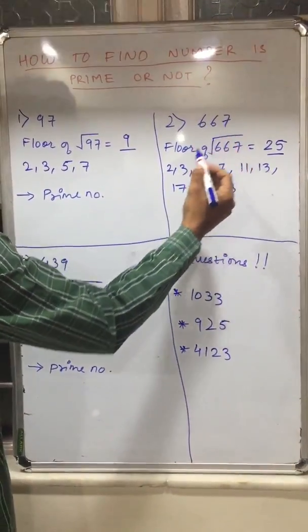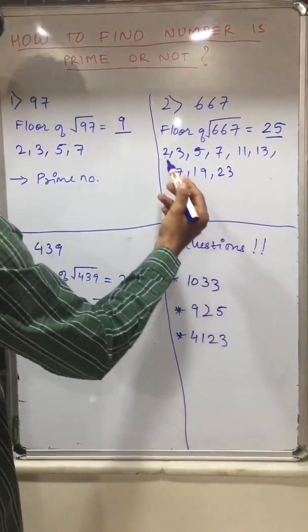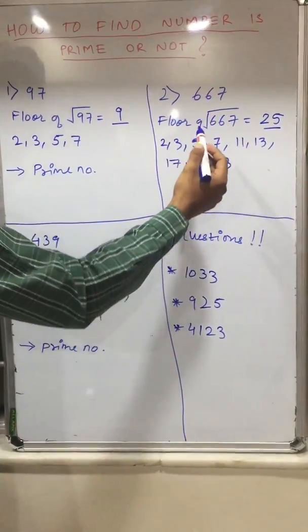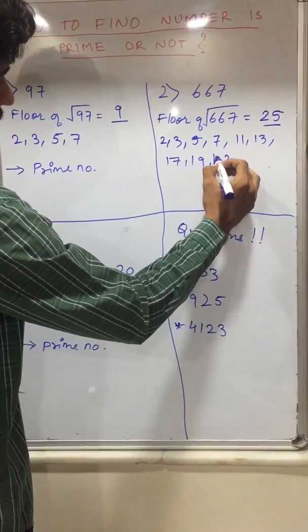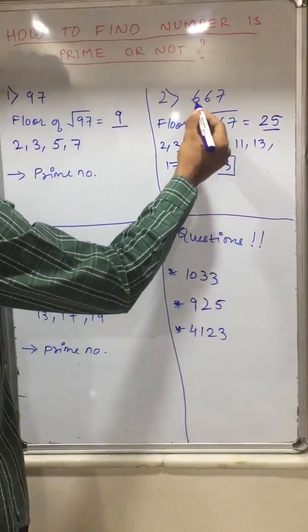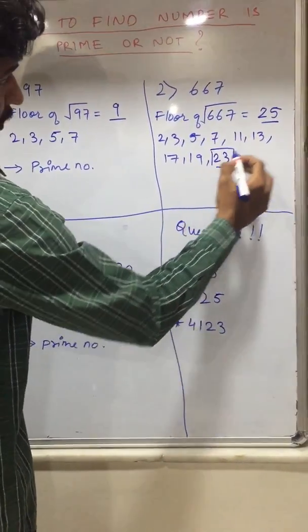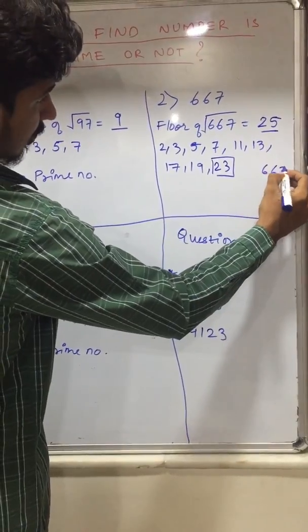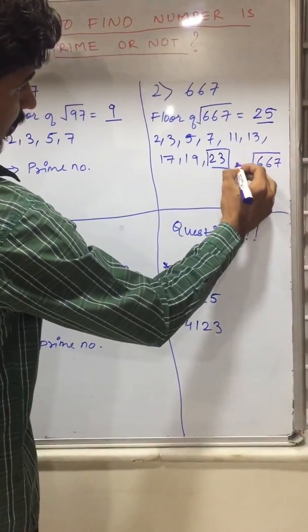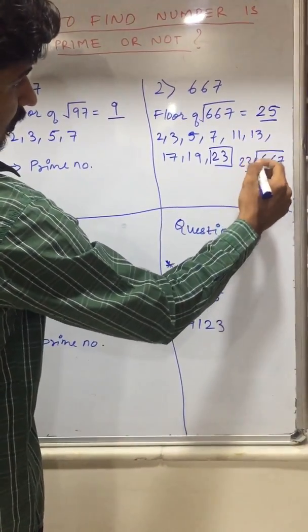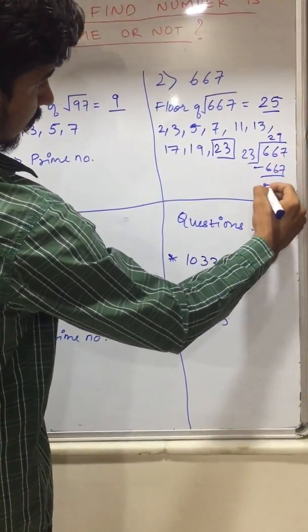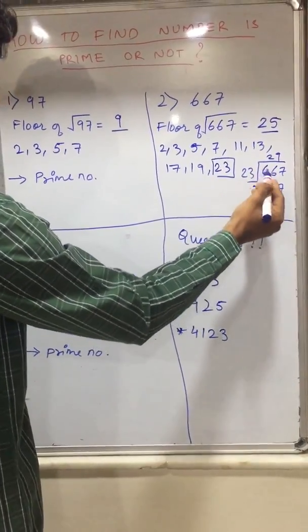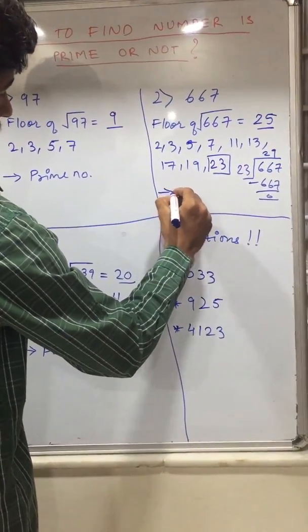Now divide 667 with all the given prime numbers. So one by one if you divide 667 with the given prime numbers, at the end 23 is a factor of 667. So it will be 667 divided by 29. So therefore 667 is not a prime number.